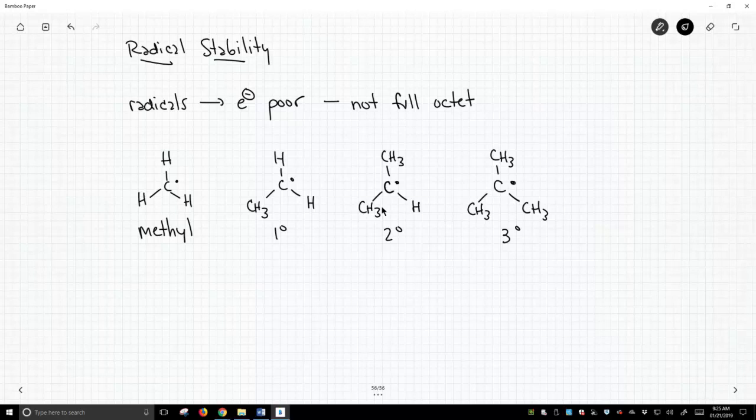So, if we're talking about carbocations, the tertiary would be the most stable. It turns out the same is true in radicals. The tertiary is the most stable. Methyl is the least stable.